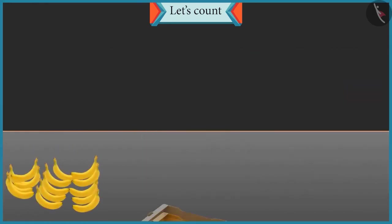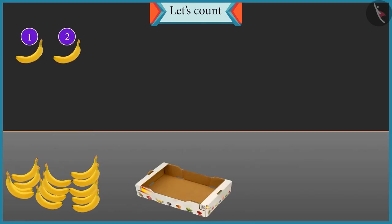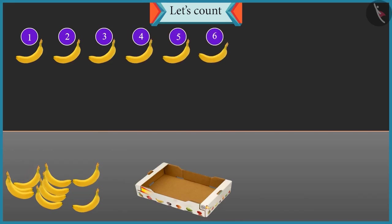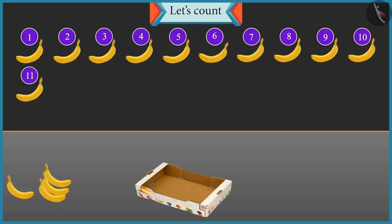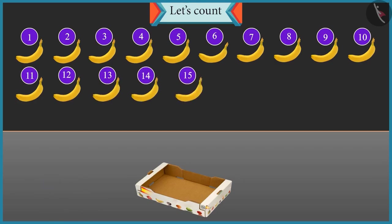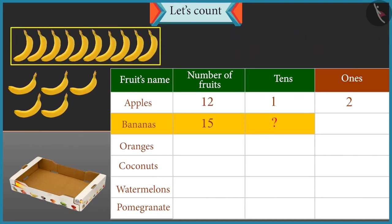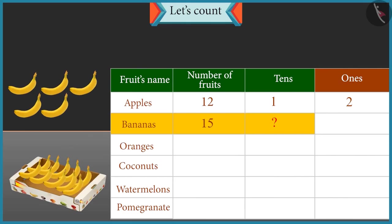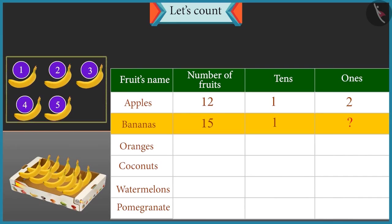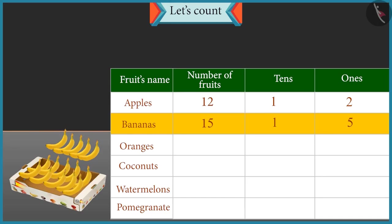Now count these bananas and place them in the second box. 1, 2, 3, 4, 5, 6, 7, 8, 9, 10, 11, 12, 13, 14 and 15. There are 15 bananas. How many tens are there in 15? A group of 10 will be formed. So there is 1 tens in 15. And how many ones are there? There are 5 bananas left. So there are 5 ones. Well done Chotu.